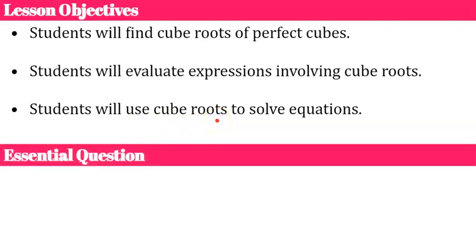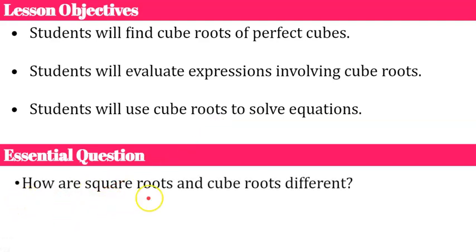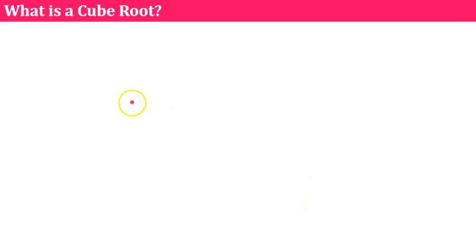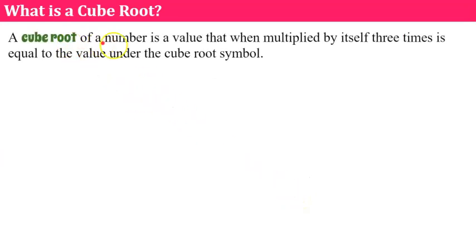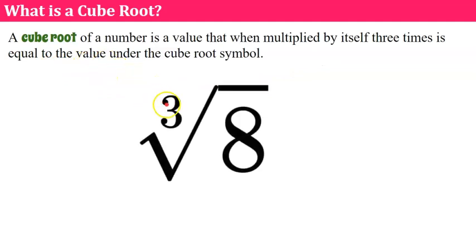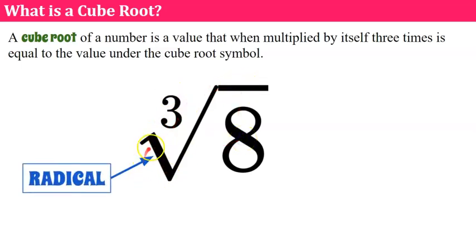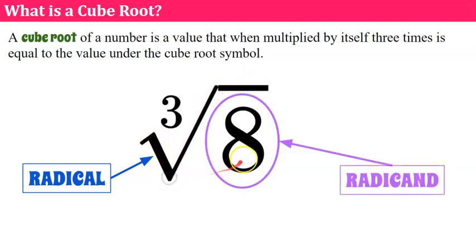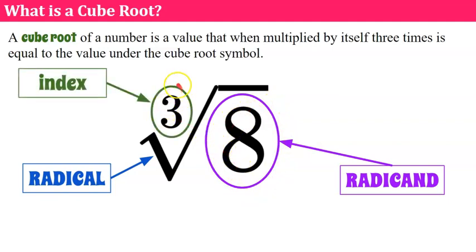Here's what I'd like you thinking about: how are square roots and cube roots different? A cube root of a number is a value that when multiplied by itself three times is equal to the value under the cube root symbol. So here we have the cube root of eight. We still have our radical, like we learned from square roots — this is our radical, and eight is still our radicand — but now we have an index.